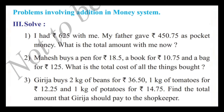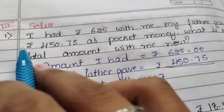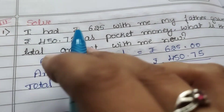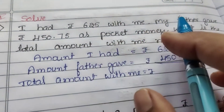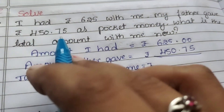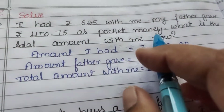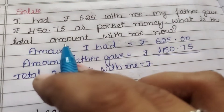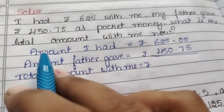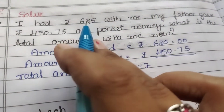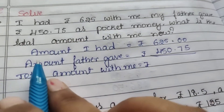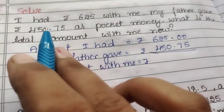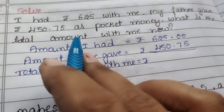Solve. The problems given here are related to addition. Third main, first question: I had rupees 6.25 with me. My father gave rupees 450.75 as pocket money. What is the total amount with me now? Amount I had is equal to 6.25. Amount that father gave is equal to 450.75.